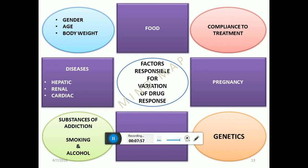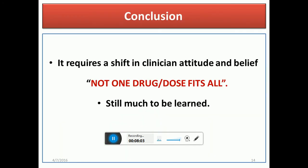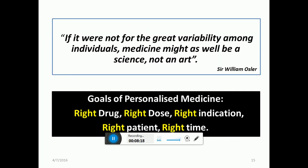This can be used as a mind map to understand pharmacogenetics. The conclusion is that much is still to be learned and it requires a shift in clinicians' approach — not one drug for all recipients. As William Osler said, variation in drug response is what makes medicine an art and not just a science. The goals of personalized medicine are the right drug, right dose, right indication, right patient, and right time.